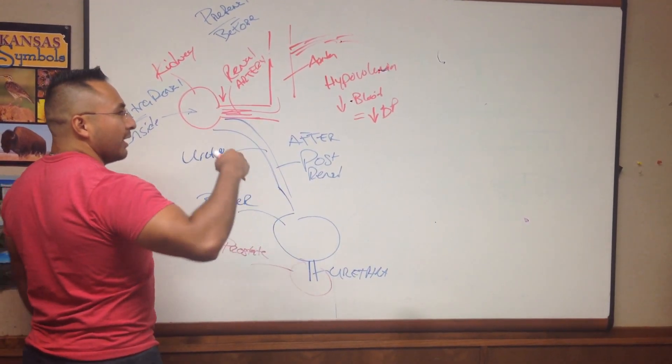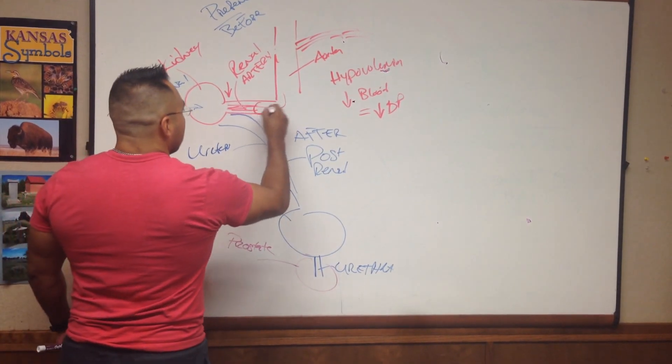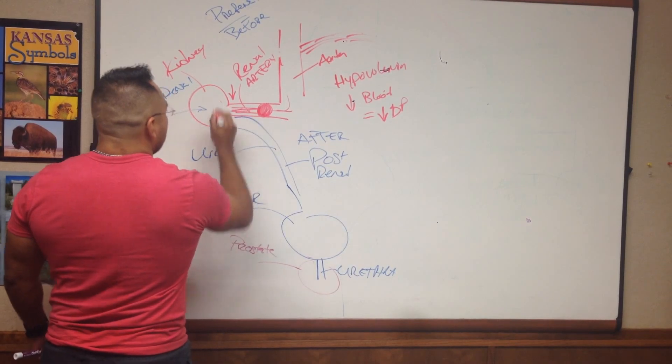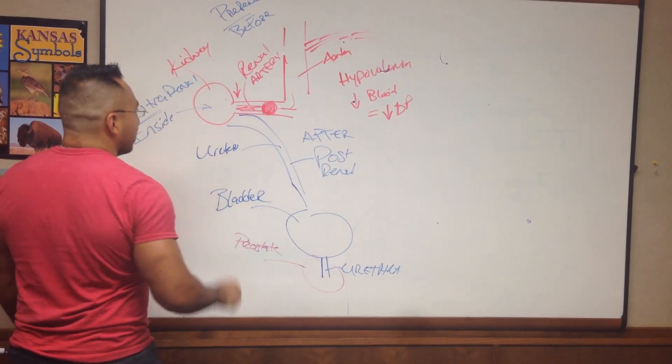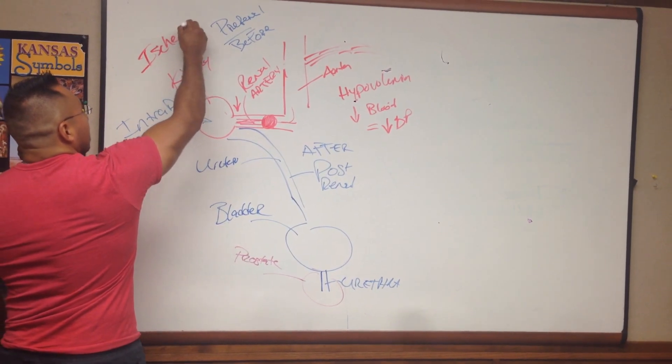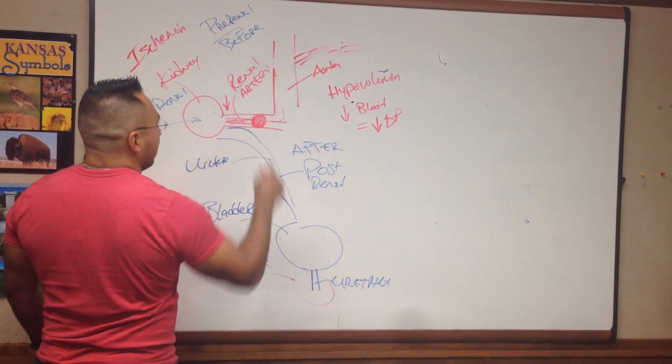Another thing that could happen is maybe you have a blood clot, an embolus. A blood clot gets here and occludes any blood from getting into the kidney. This would again result in renal ischemia or decreased oxygenation to the kidney. So that would be pre-renal.